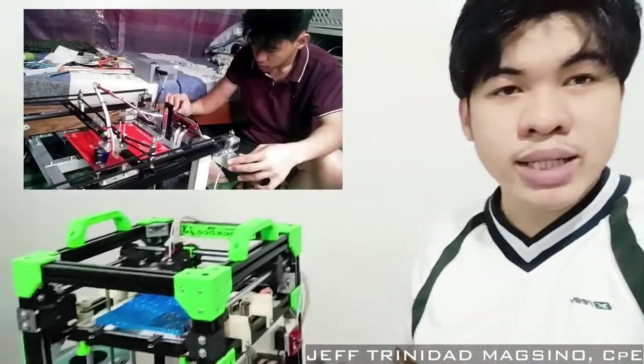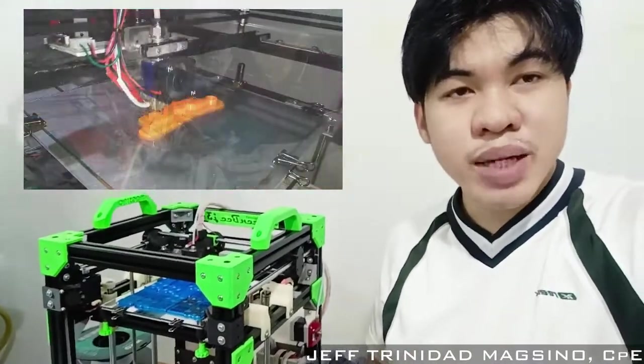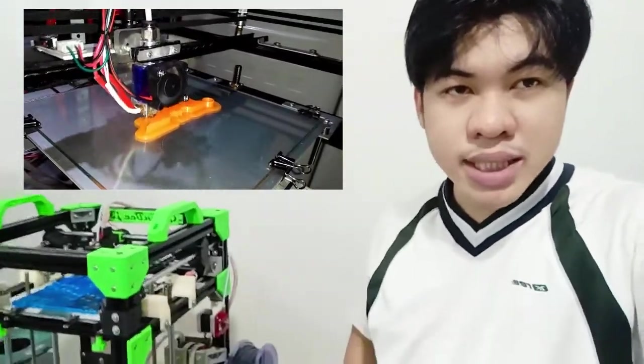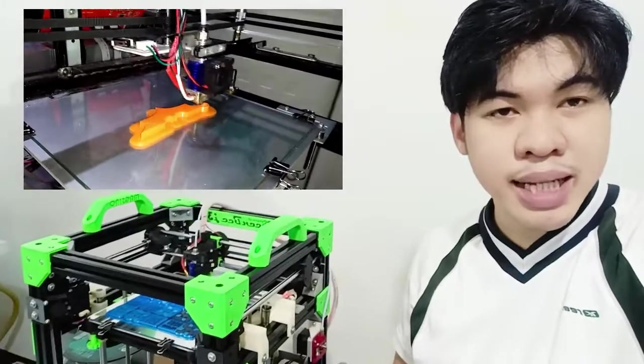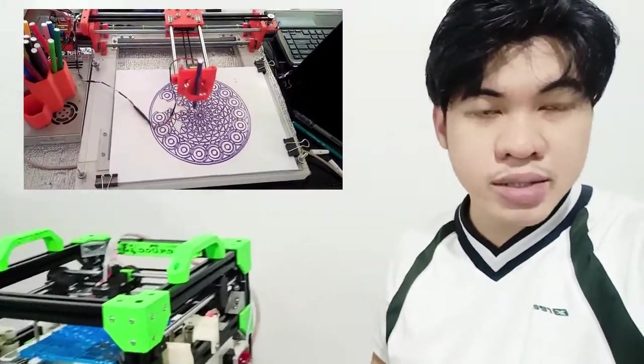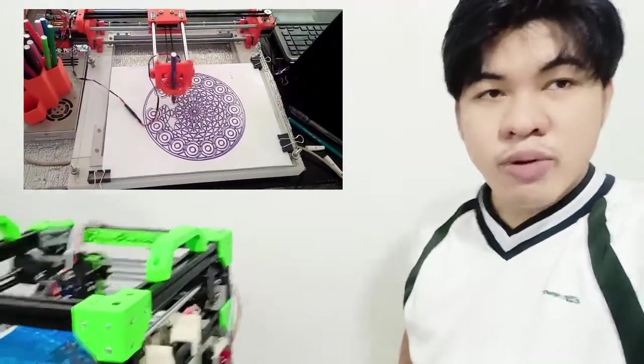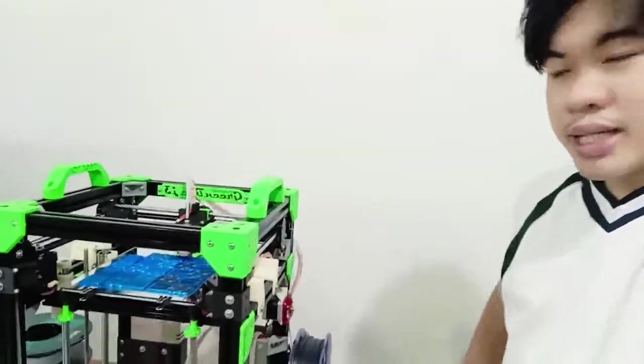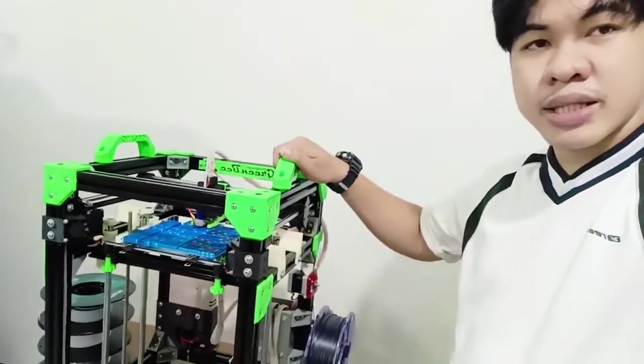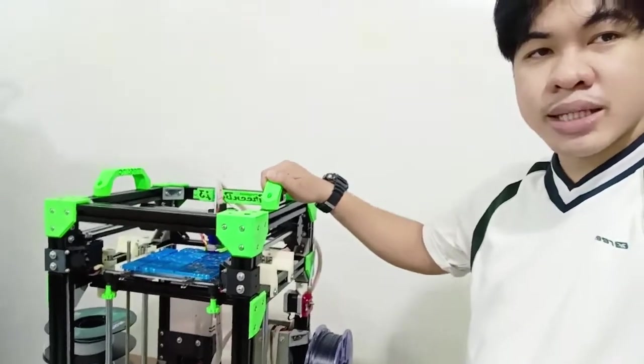One year ago, I uploaded a video of my first DIY 3D printer that is made from almost electronic waste materials or scrap. This 3D printer helps me a lot in making new projects and cool stuff. And one of the projects that I've made using this 3D printer is building another 3D printer which I named Green Bee.